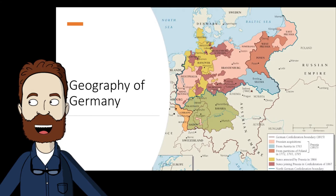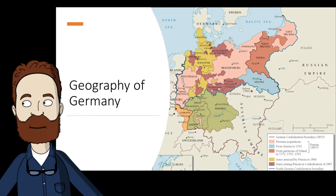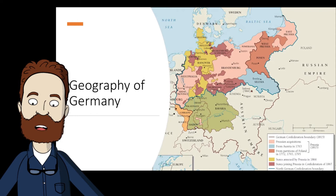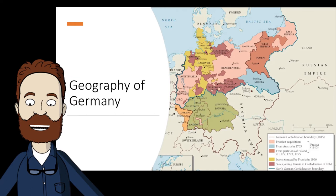Because Germany didn't form into a nation until later, they didn't expand overseas like France or Great Britain, but instead Germans expanded eastward toward Poland and Russia. What this did was it formed islands of the German language, culture, and loyalty inside other European kingdoms, which would create a great problem in the future.